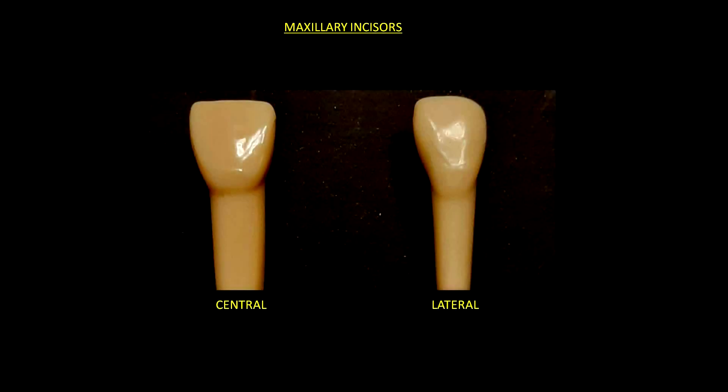Hi guys. In this video I am going to show you how to identify the permanent dentition by showing you the keys of each tooth. Let's start with the maxillary teeth. We have two maxillary incisors, the central and the lateral.